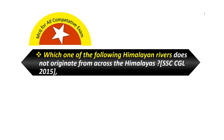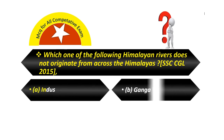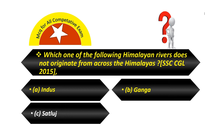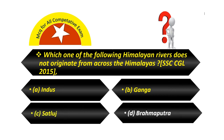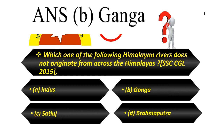Which one of the following Himalayan rivers does not originate from across the Himalayas? Option A — Indus. Option B — Ganga. Option C — Sutlej. Option D — Brahmaputra. Answer is Ganga.